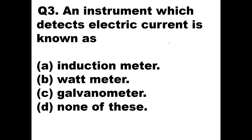Question 3: An instrument which detects electric current is known as — options: induction meter, watt meter, galvanometer, or none of these. A galvanometer is the one which detects electric current. Galvanometers are used in bridge circuits to test whether any current is flowing. So the answer is Option C, galvanometer.